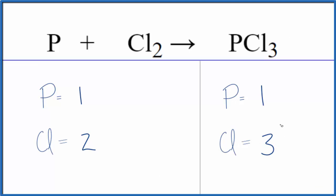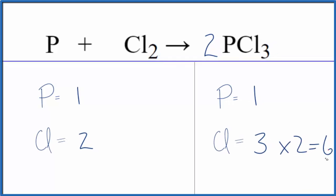When we have something like this where we have an odd number, it's best to get that to an even number. Makes it a lot easier to balance. So let's put a two in front of our PCl3. Three times two gives us six. There's our even number.